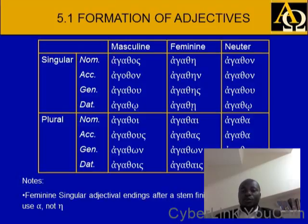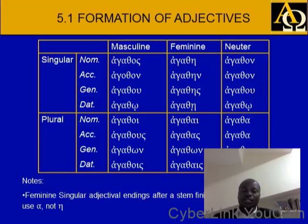If you notice, you will see that agathos declines very much like kurios. So: agathos, agathon, agathou, agatho, agathoi, agathous, agathon, agathois.